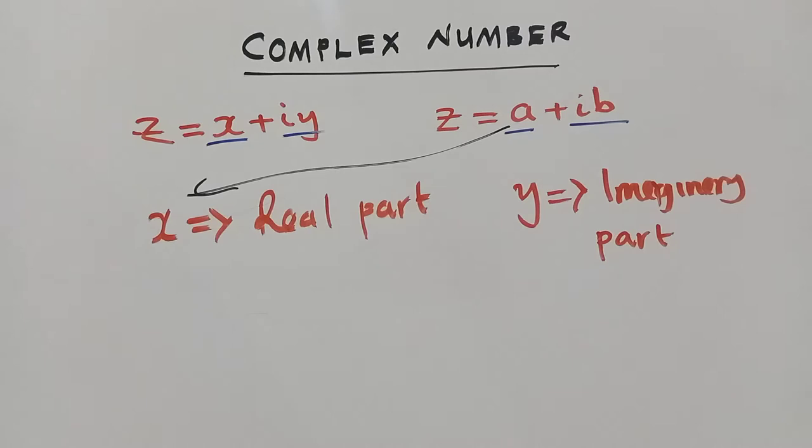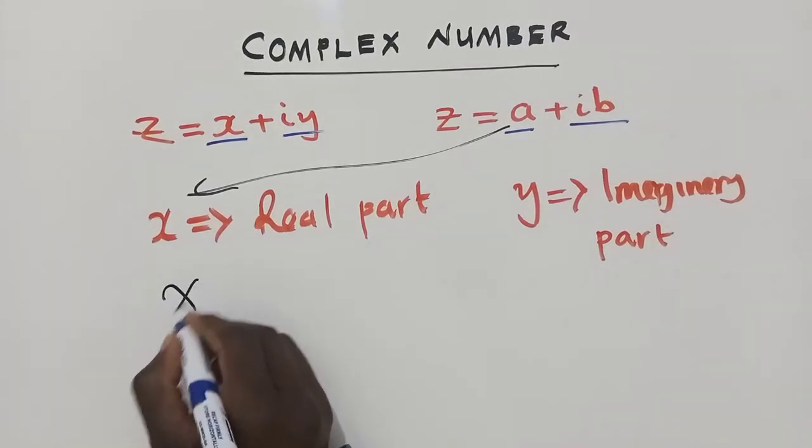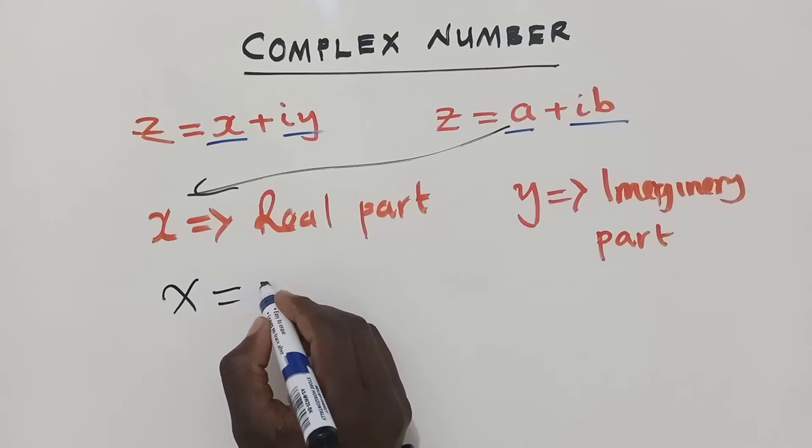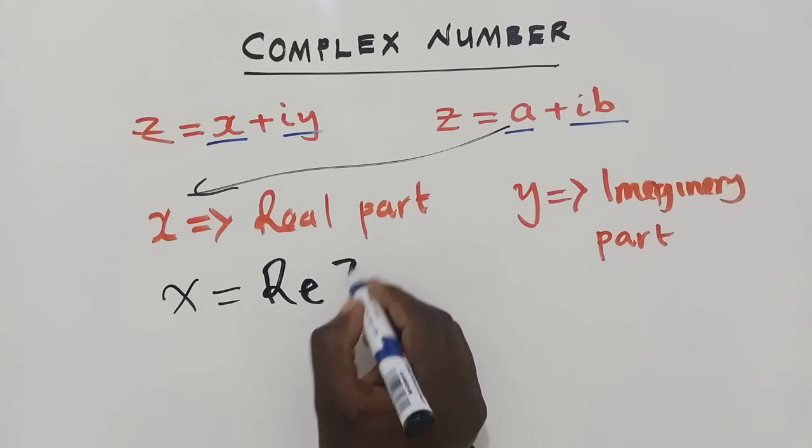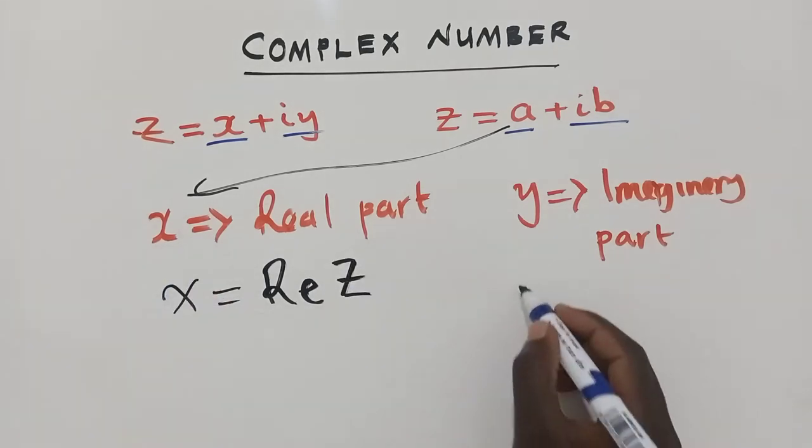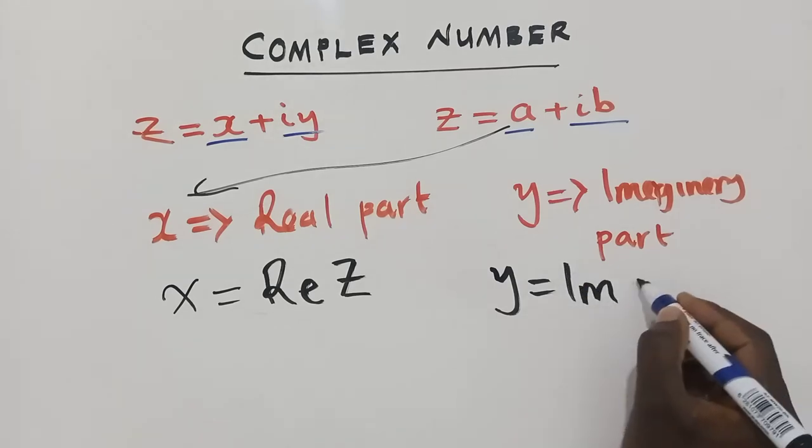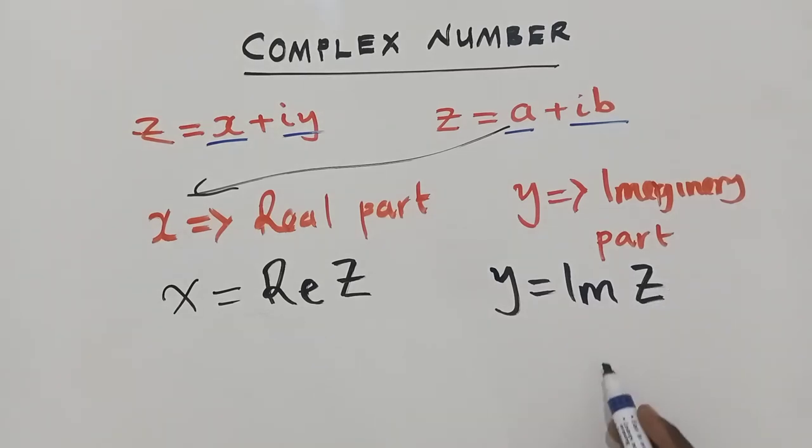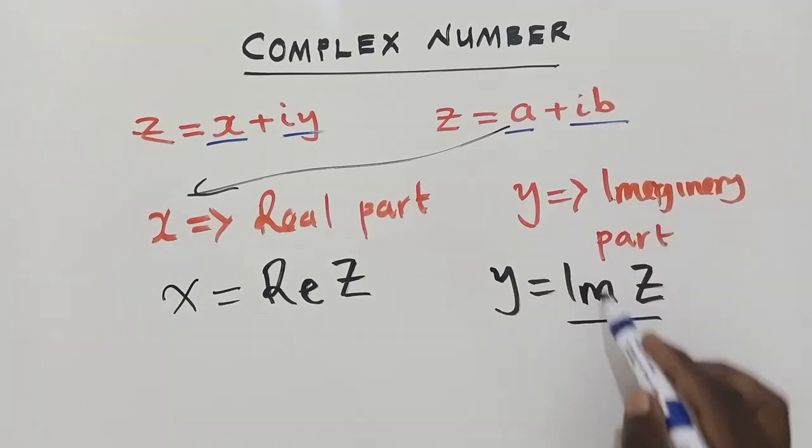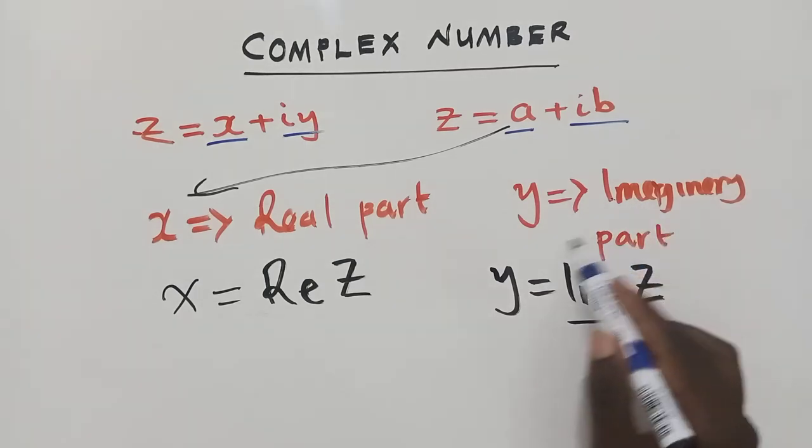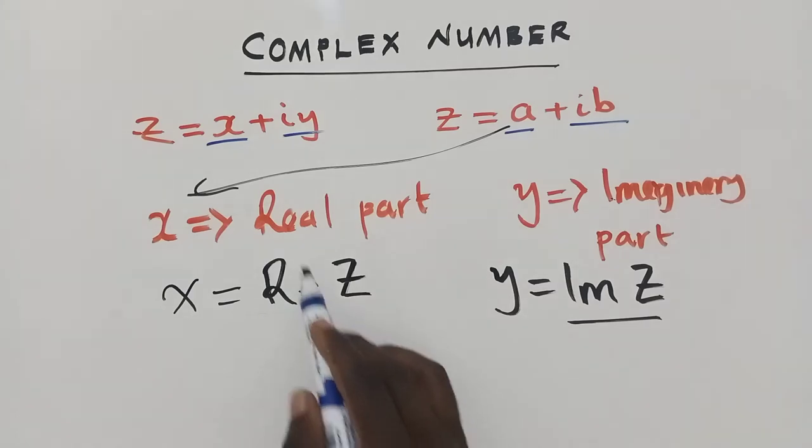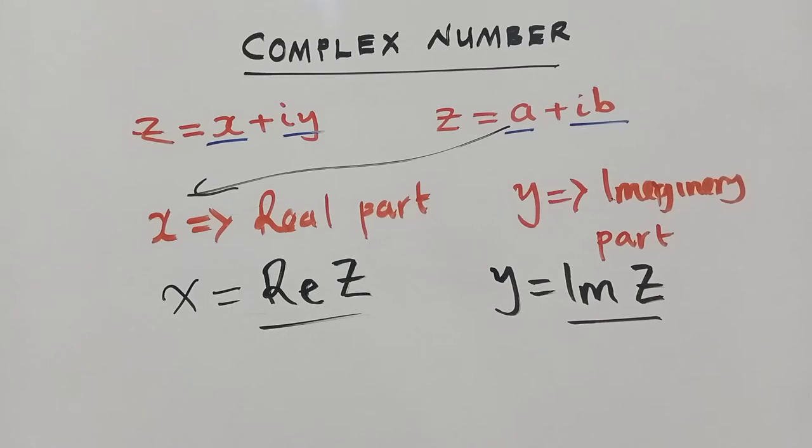So this X can be denoted as Re(Z), real part of Z. So this is the real part. And then the Y, we said it's an imaginary, so it can be written as the imaginary part of Z. This is how you just get it. Im(Z), meaning you're talking about imaginary. When you get Re, the real from real, Re(Z), you're talking about the real part.